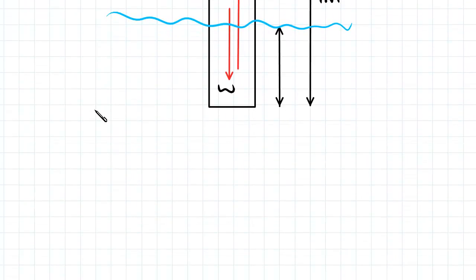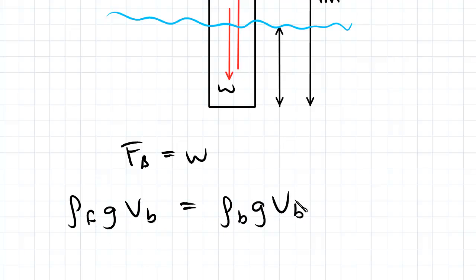So equilibrium in the vertical direction, we have FB equal to W. Looking at each of these, we know that FB equals rho F times G times VB and W equals rho B times G times VB.